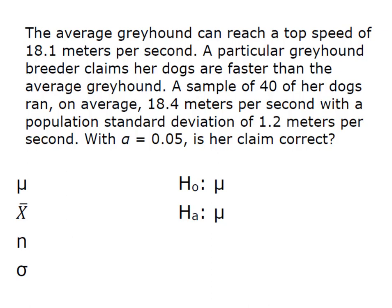The average greyhound can reach a top speed of 18.1 meters per second. A particular greyhound breeder claims her dogs are faster than the average greyhound. A sample of 40 of her dogs ran, on average, 18.4 meters per second with a population standard deviation of 1.2 meters per second. With alpha equal to 0.05, is her claim correct?